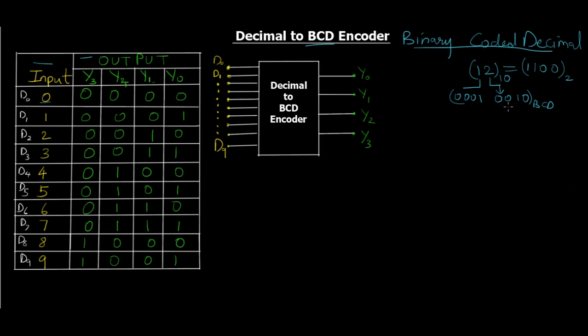So what a decimal to BCD encoder does is it converts a decimal number to a BCD number. Basically, an encoder's function is to convert one format of data into another format. In this case, the input is a decimal number and the output is a BCD number. For decimal numbers we have 0 to 9, right?